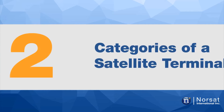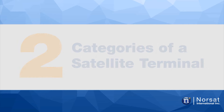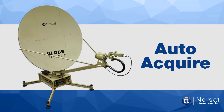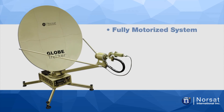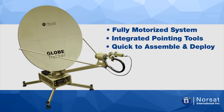Now that you know about the two types of satellite terminals, we can talk about the differences between the two categories of satellite terminals. An auto-acquired terminal is a fully motorized system and uses integrated pointing tools to acquire the satellite and peak the signal. The benefit of an auto-acquired system is that it is very quick to assemble and deploy.